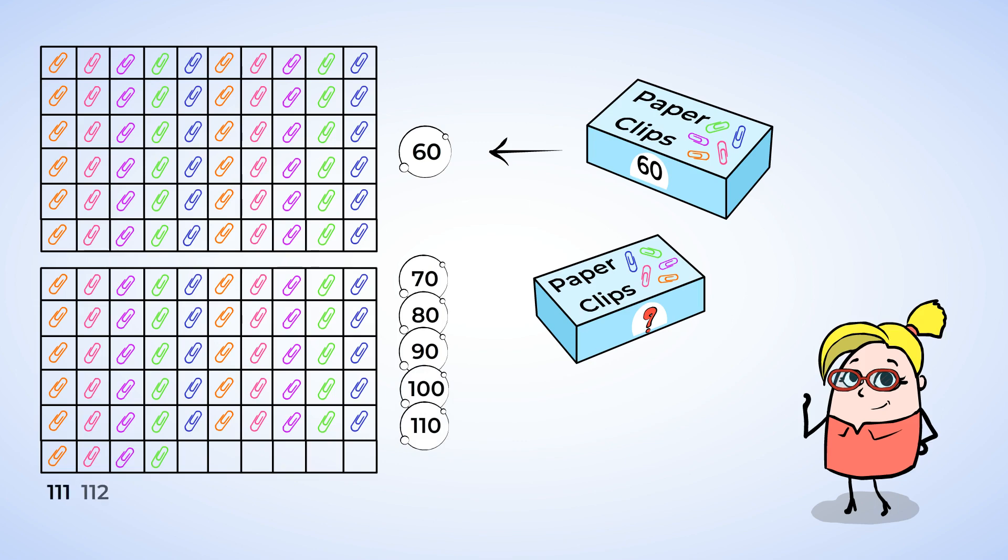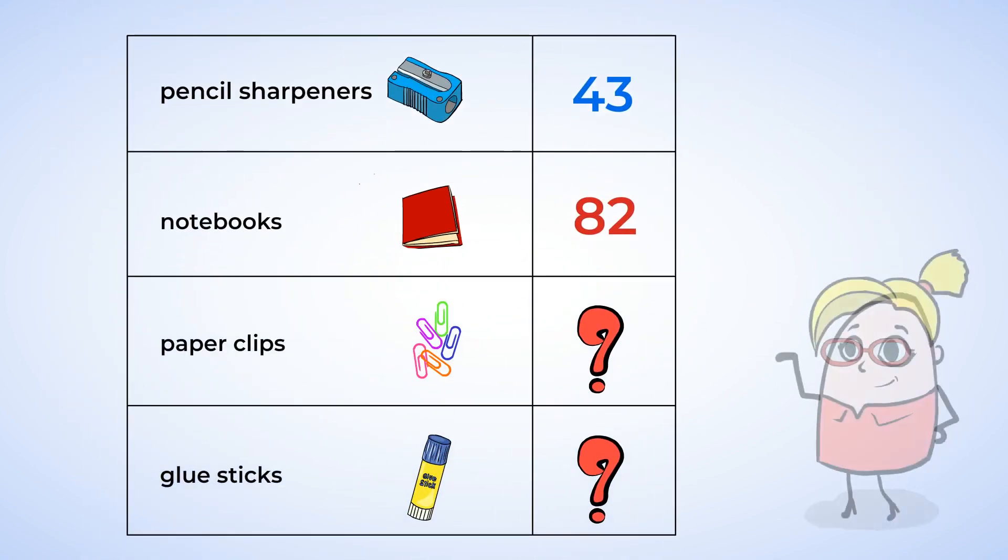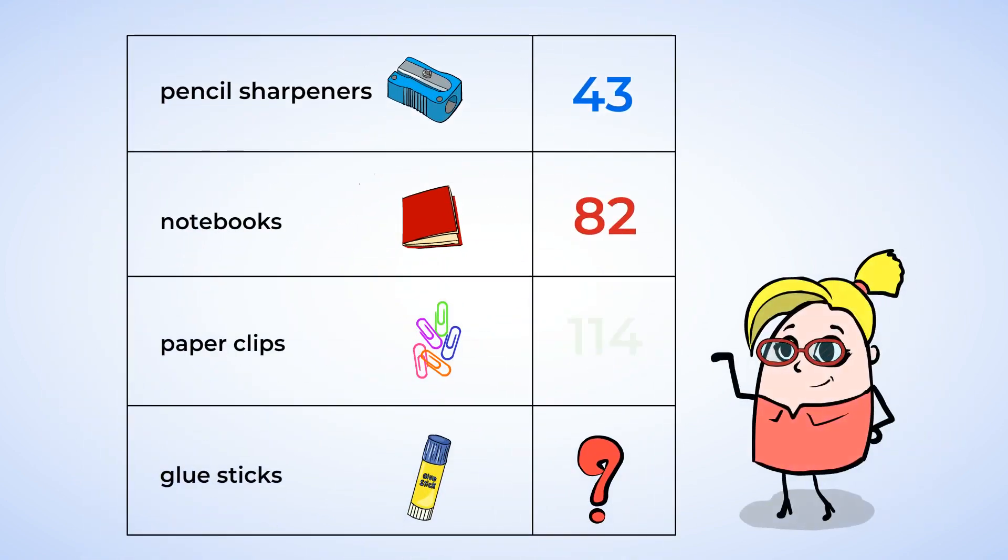111, 112, 113, 114. There are 114 paper clips. So we write a 1, a 1, and a 4 from left to right. And we're going to write that number 114 on the list next to where it says paper clips.